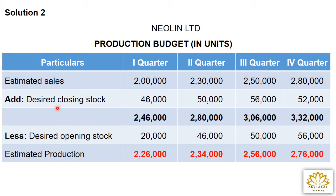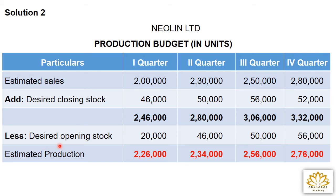Add desired closing stock — next quarter's 1/5th. From workings: 1st quarter = 46,000; 2nd = 50,000; 3rd = 56,000; 4th = 52,000. Totals: 1st = 2,00,000 + 46,000 = 2,46,000; 2nd = 2,30,000 + 50,000 = 2,80,000; 3rd = 2,50,000 + 56,000 = 3,06,000; 4th = 2,80,000 + 52,000 = 3,32,000.